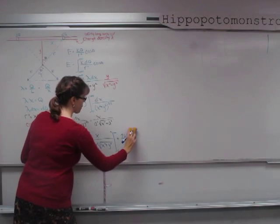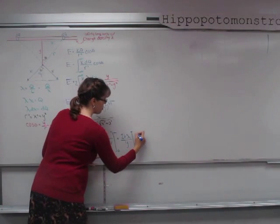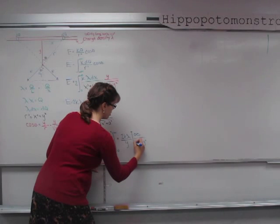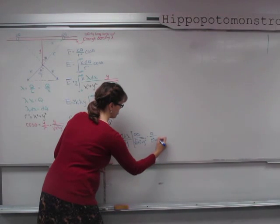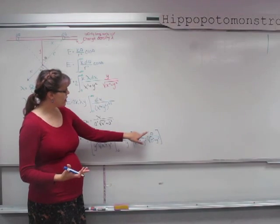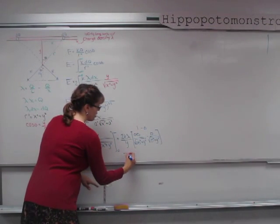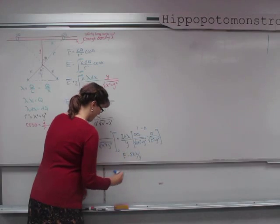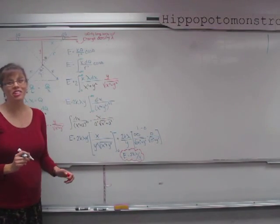Plugging in the limits: at infinity, x over sqrt(x² + y²) goes to 1; at zero, it equals 0. So we get 1 minus 0, and the electric field equals 2·k·lambda divided by y. Isn't it great how it boils down to such a simple equation!